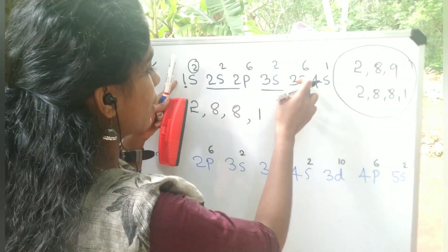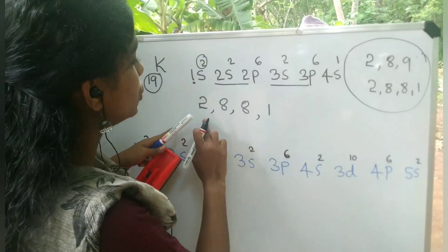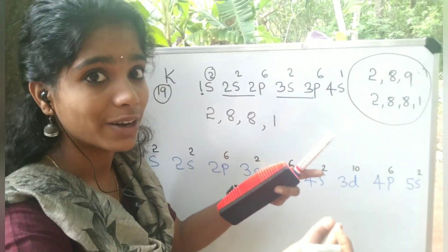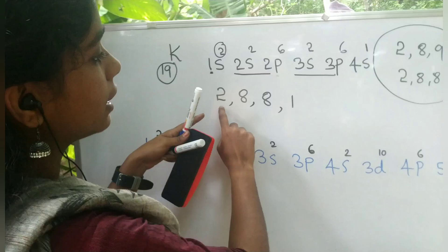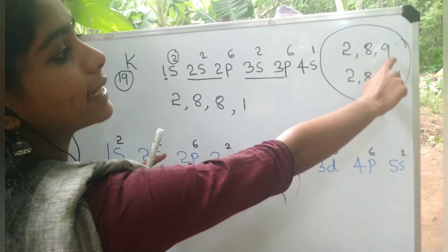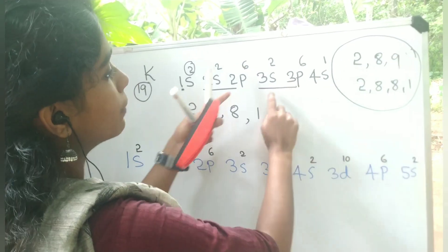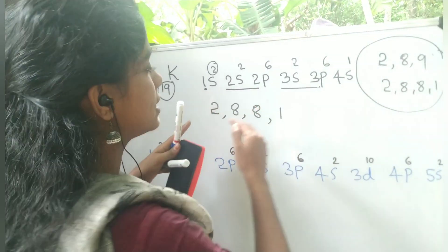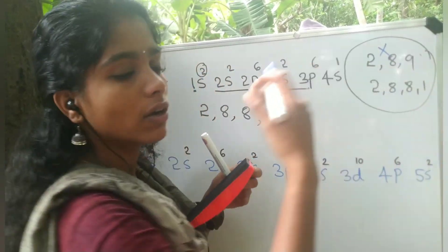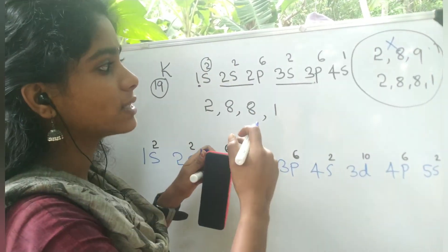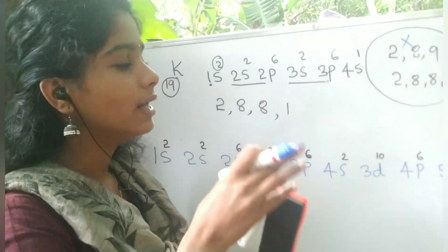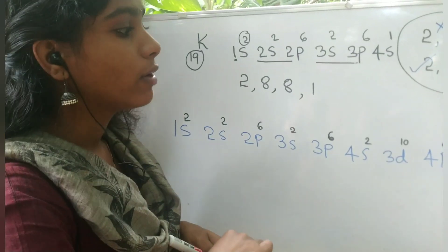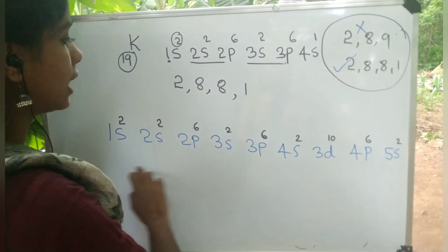This is the sub-shell electronic configuration. The sub-shell electronic configuration of 2, 8, 8, 1 is shown here. Now we are going to learn the electronic configuration in this order, and I will continue to do this.